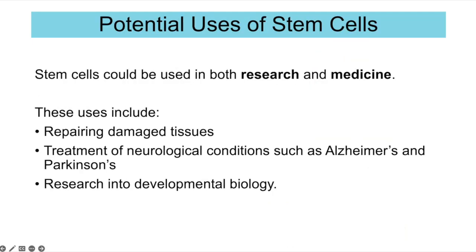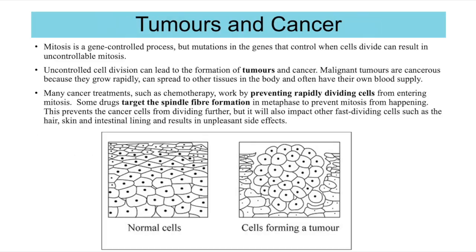Potential uses of stem cells include research and medicine — for example, repairing damaged tissues, treating neurological conditions such as Alzheimer's or Parkinson's where there is damage to neurons in the brain, or in developmental biology research. However, because stem cells self-renew they could lead to the formation of tumours, which takes us to the concept of what a tumour and cancer actually are.